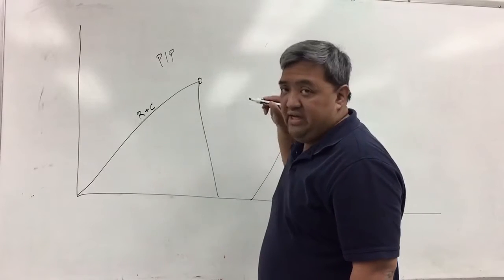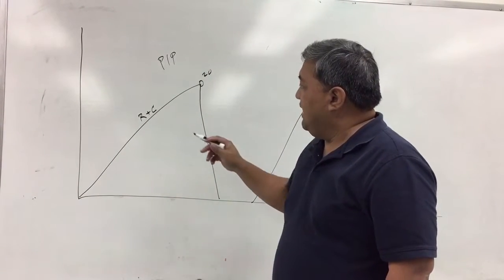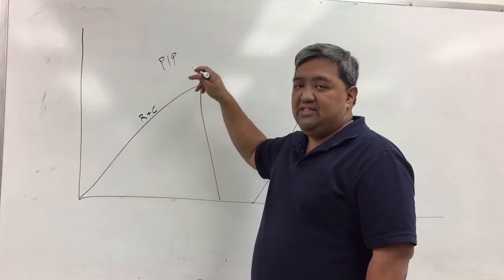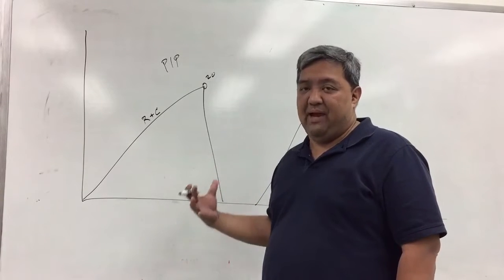So here at this endpoint, this is your PIP. Let's say this is 20 centimeters of water pressure. That means it needs 20 centimeters of water pressure to go through the airways and expand the lungs.